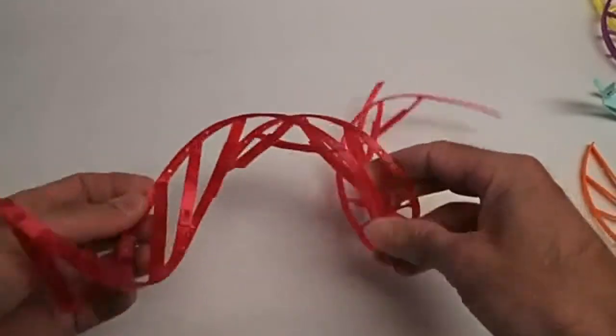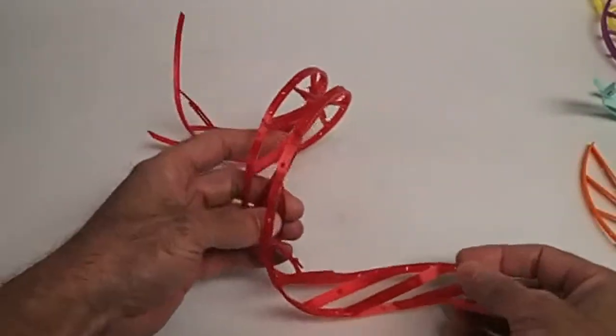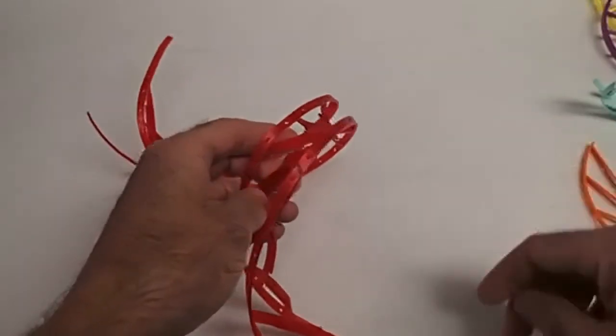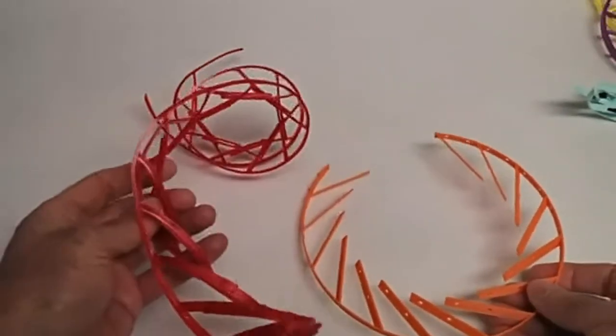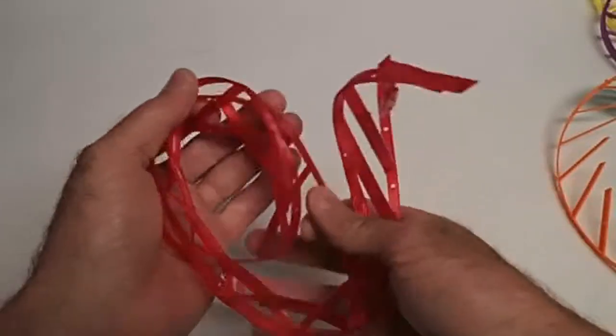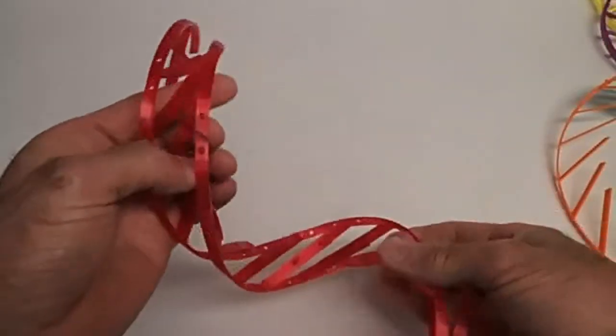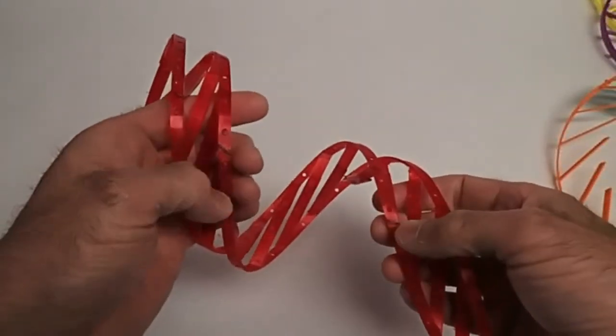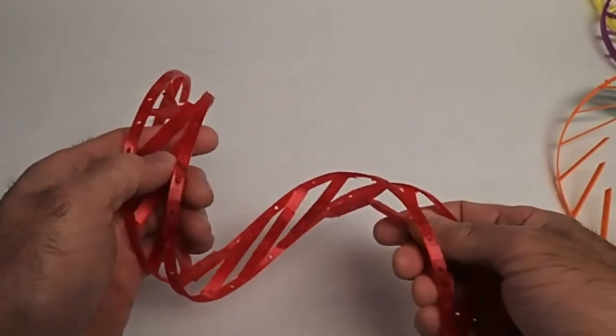And then I came up with the idea of using the flex filament or the TPU. This is printed the same way. So now with this, it's very soft, but the problem is it's almost too soft, right? So with the flex, it's an order of magnitude less stiff than the PETG.